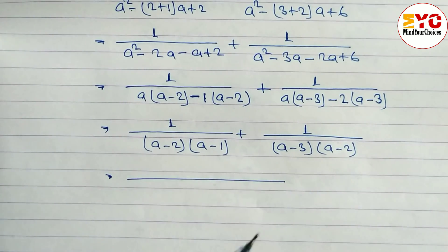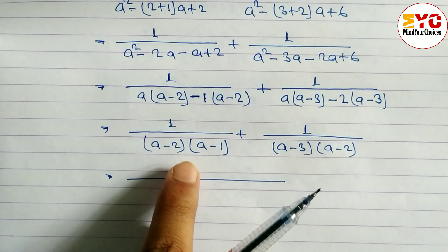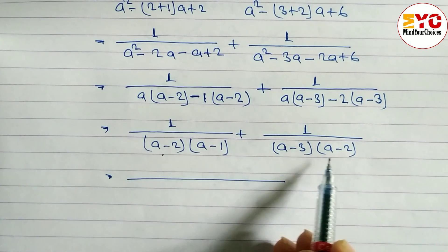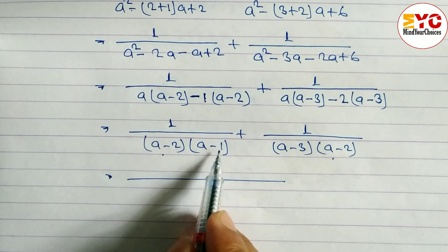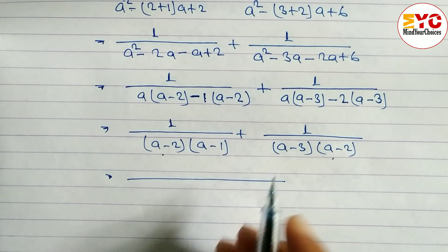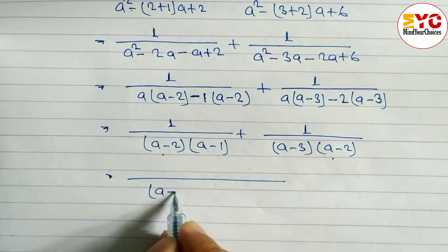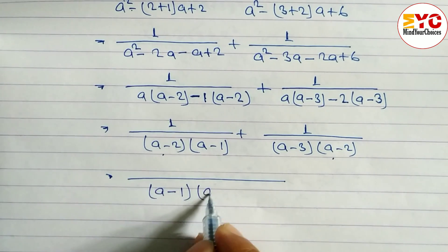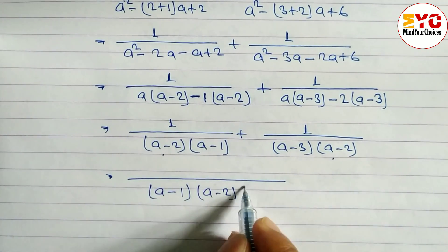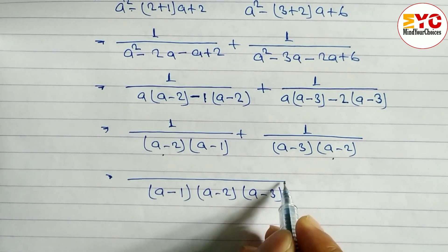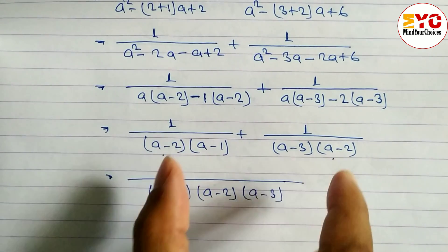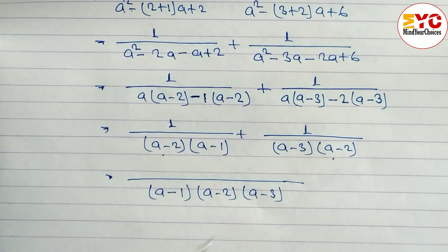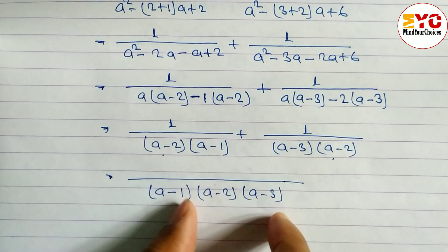Now taking the LCM: we take common elements only once. The common element is (a-2), written only one time. The remaining elements are (a-1) and (a-3). So the LCM is (a-1)(a-2)(a-3), written in ascending order.